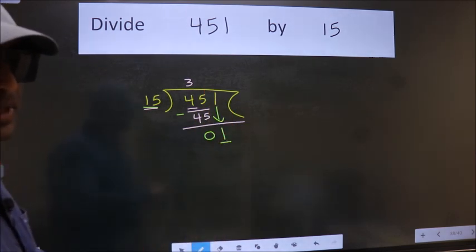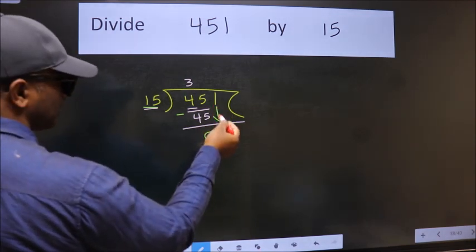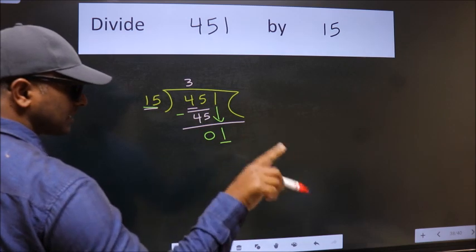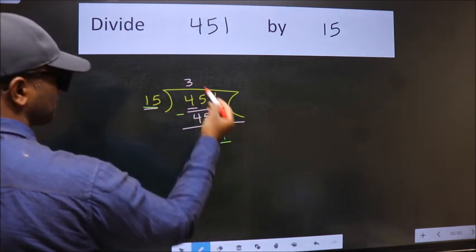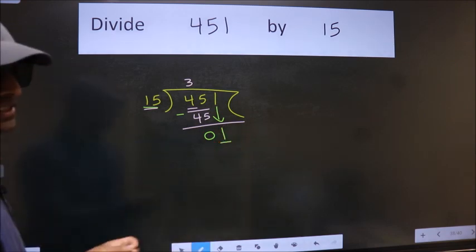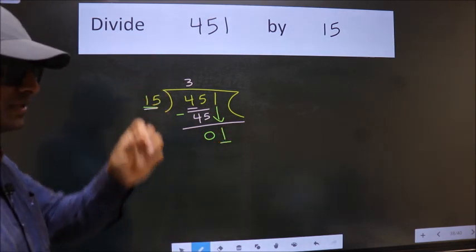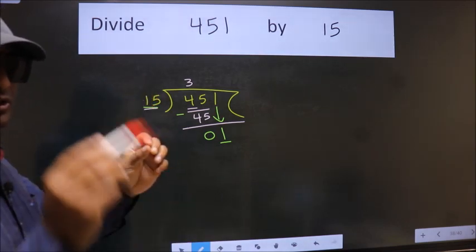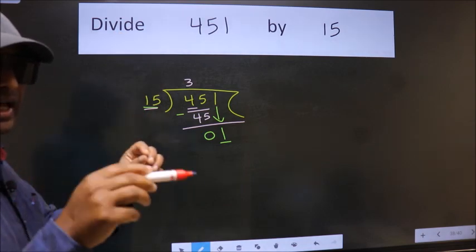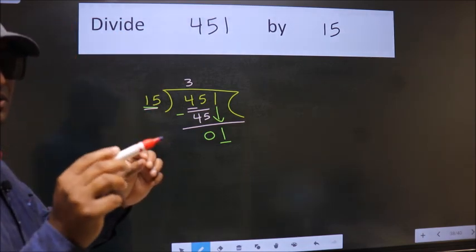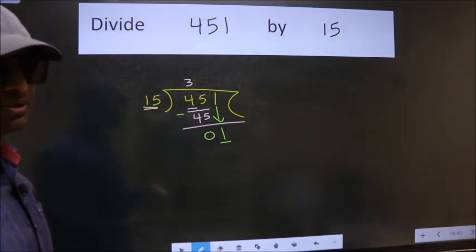Why is it wrong? Because just now you brought this number down. And in the same step, you want to put dot, take 0, which is wrong. I repeat. Bring down the number and also put dot, take 0. Both at the same step, you should not do.